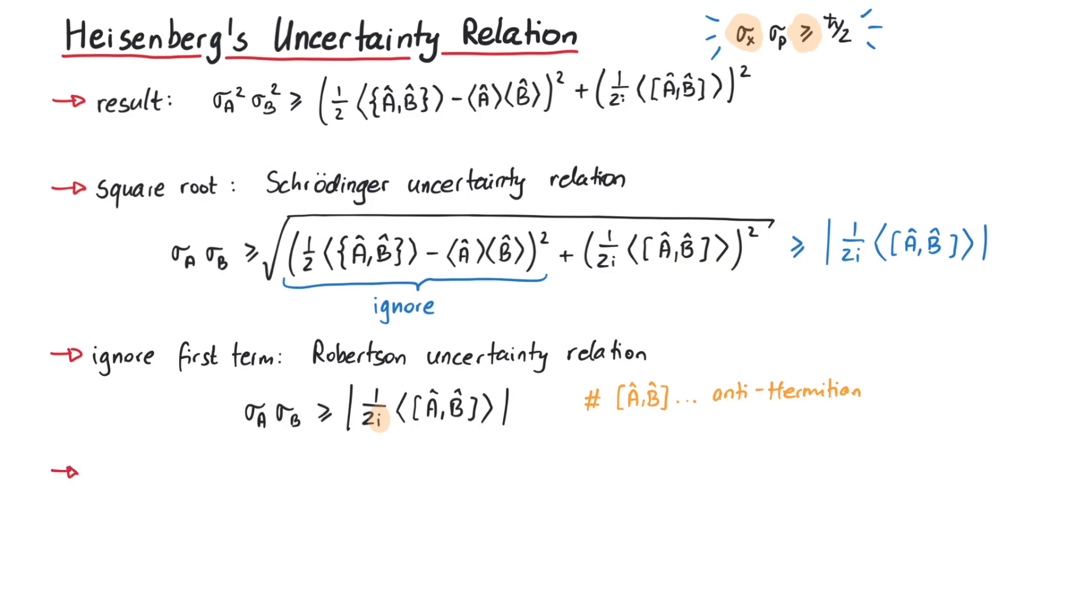Finally, if we let A be the position operator and B the momentum operator, the commutator of x and p is i times h-bar. Since this is just a number, its expectation value is also i times h-bar, and we arrive at Heisenberg's uncertainty relation. As you can see, since the commutator of the position operator and the momentum operator is not zero,